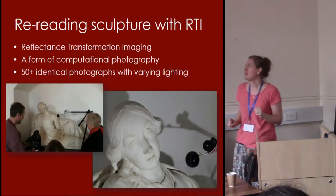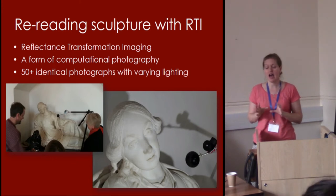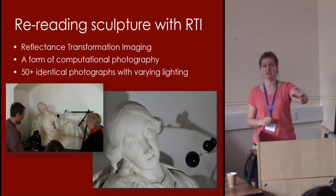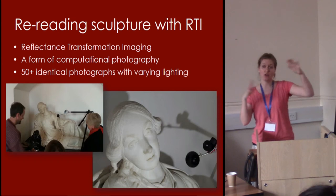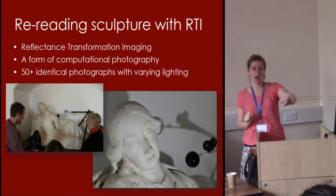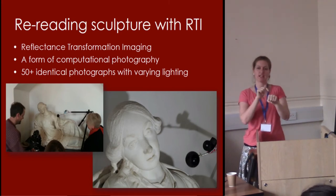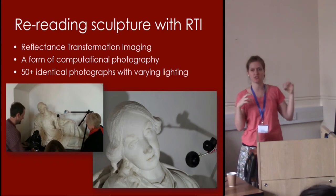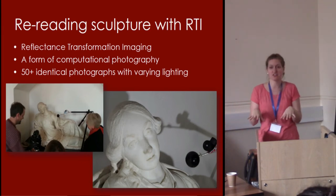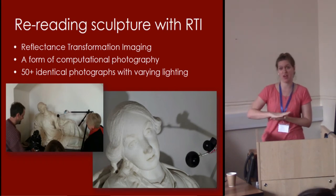We do a process quite a lot in the field called Reflectance Transformation Imaging. It's essentially computational photography. You position a digital SLR in front of an object and put a little shiny ball in frame. The shiny ball stays in the same place, the camera doesn't move, and neither does the object. You take lots of photographs — 50 to 80 — and in every photo you shine a light from a different direction. The ball, usually a snooker ball, shows a shiny reflection dot from each flash position. Open source software then puts all that information together and creates a compiled interactive image where you can move the light source around. But it's not actually compiling 80 photos — it's creating a kind of synthetic compilation of that data.